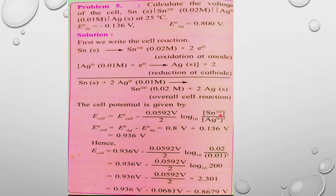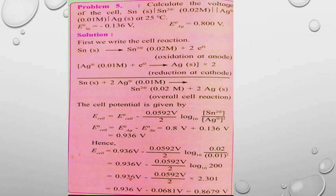Substituting values: E_cell = 0.936 − (0.0592 / 2) × log(0.02 / (0.01)²). The logarithm term evaluates to log(200) = 2.301. So: E_cell = 0.936 − (0.0592 / 2) × 2.301.